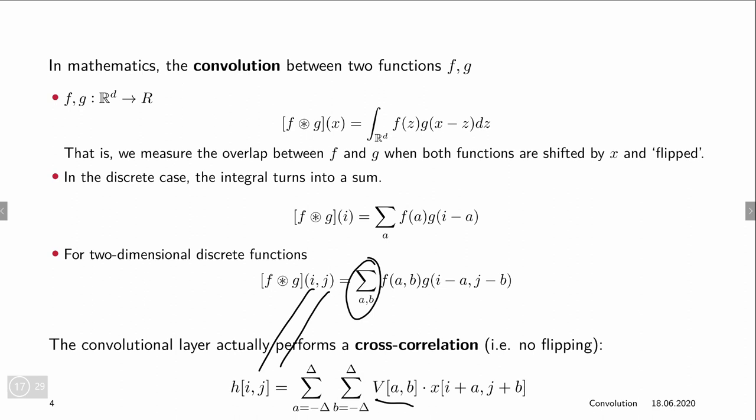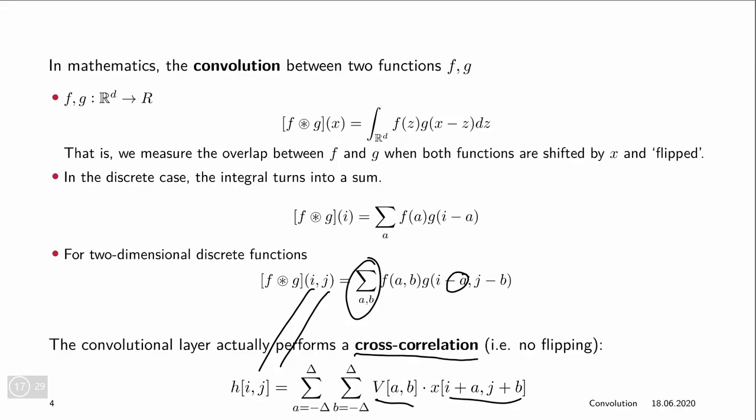And now there's the big difference: instead of flipping this part here, we sum it up, and that's why it's formally not really a convolution but another mathematical operation which is called the cross-correlation.